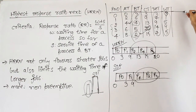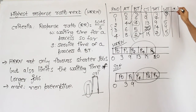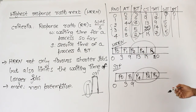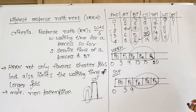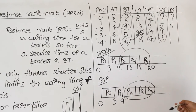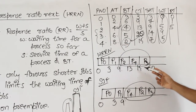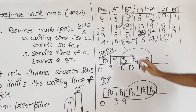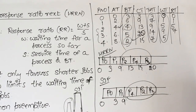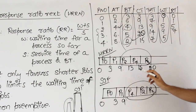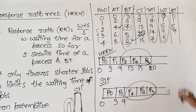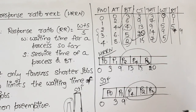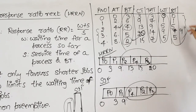We can also compute response time for each process. P0 arrived at 0 and was scheduled immediately, so response time = 0. P1 arrived at 2, scheduled at 3, response time = 1. P2 arrived at 4, scheduled at 9, response time = 5. P3 arrived at 6, scheduled at 15, response time = 9. P4 arrived at 8, scheduled at 13, response time = 5. From these values, you can compute the average response time. The response ratio in HRRN is better compared to SJF.